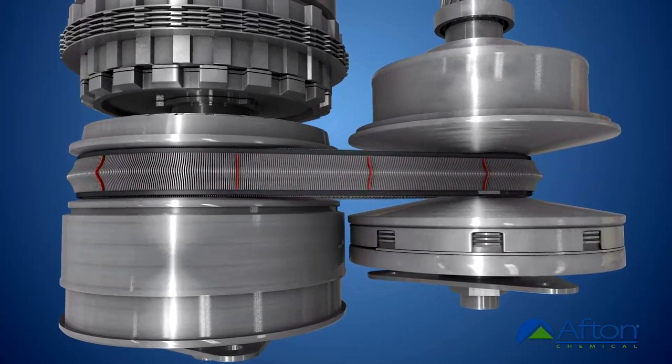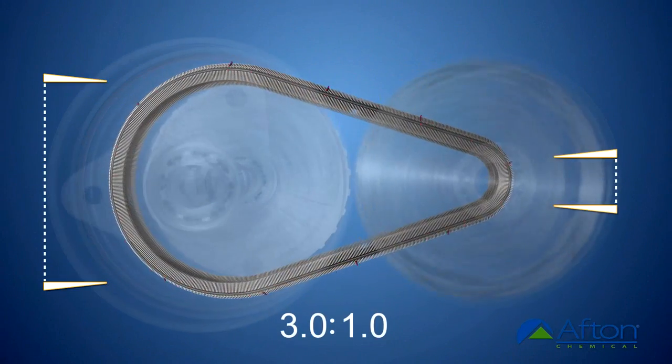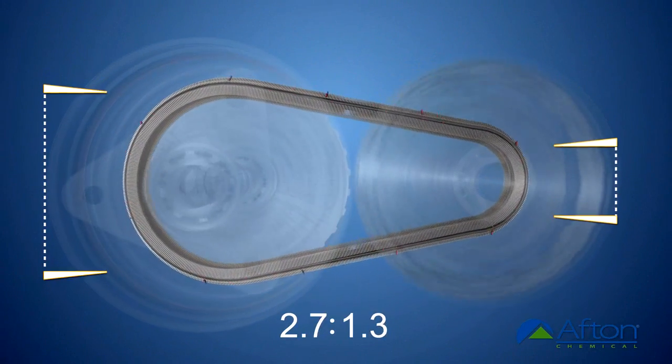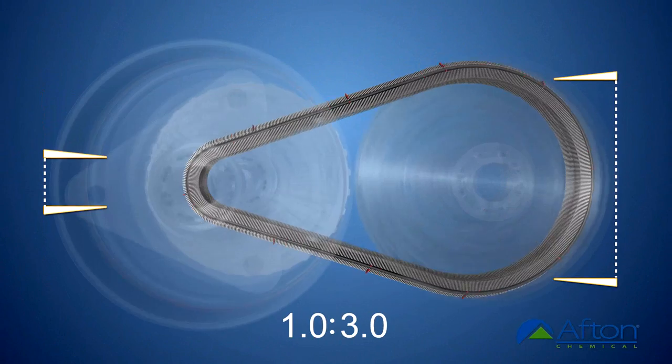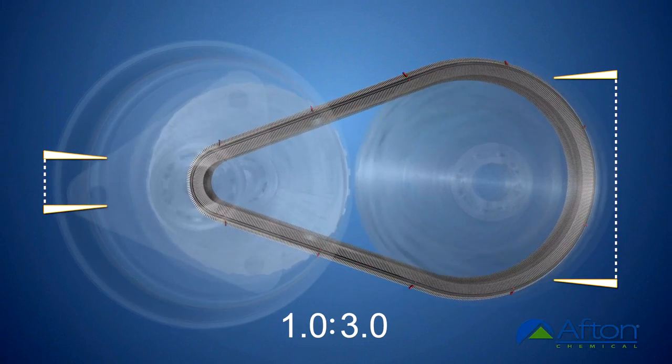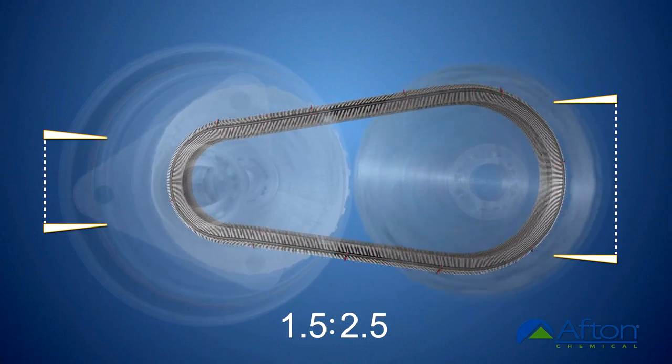Changing the distance between these surfaces also changes the radius on which the belt rides, providing an infinite number of possible gear ratios.